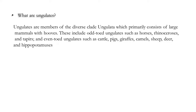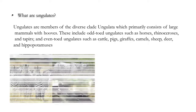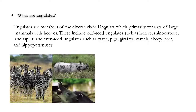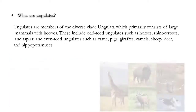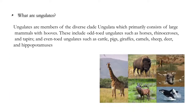Odd-toed hoofed mammals are called perissodactyls. They include tapirs, rhinos, zebras, horses, donkeys, etc. And even-toed hoofed mammals are called artiodactyls. They include bovids such as buffalo and bisons, and also cervids, pigs, camels, etc.